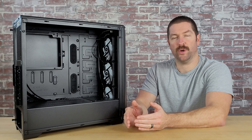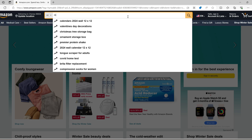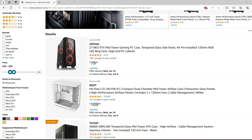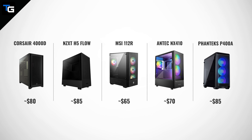But let's walk you through the process we took to choose our case. First, we went to Amazon and searched for mid-tower cases, changing the price range from $50 to $90. Some of the options that immediately stood out were the Corsair 4000D for $80, the NZXT H5 Flow for $85, the MSI MagForce 112R for $65, the Antec NX410 for $70, and the Phanteks Eclipse P400A for $85. From there, we just needed to go to each case's product page on the manufacturer's website to check their spec sheet to make sure they met the clearance requirements. We already did this for each of the cases, and we found that all of them can physically hold all of our components.